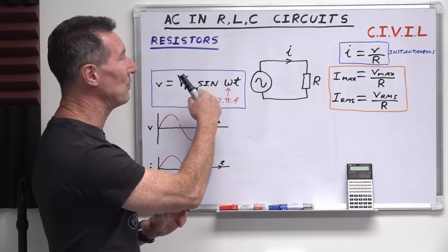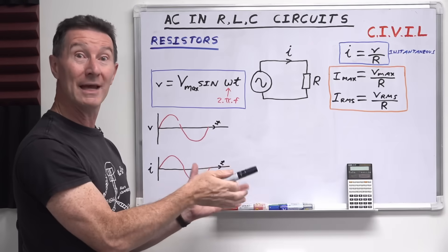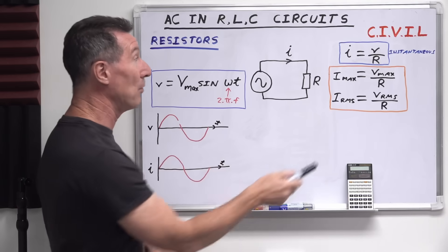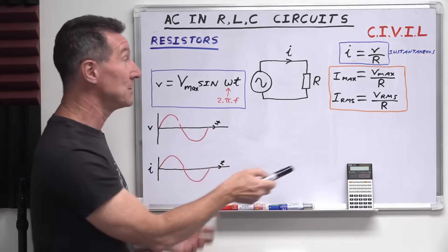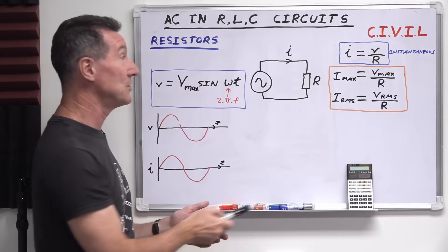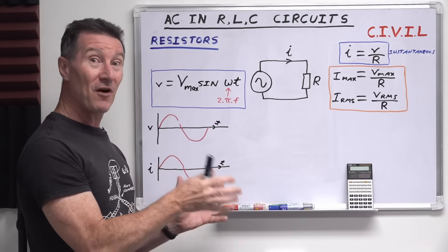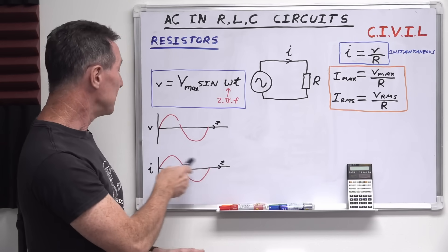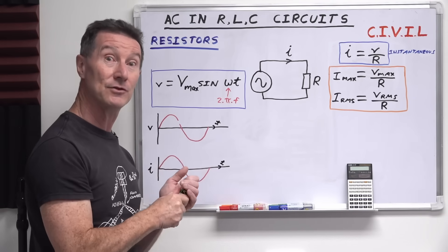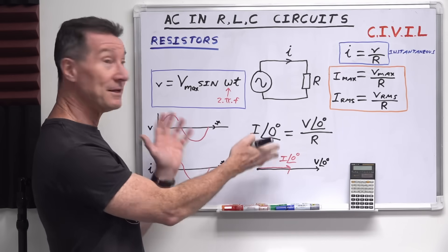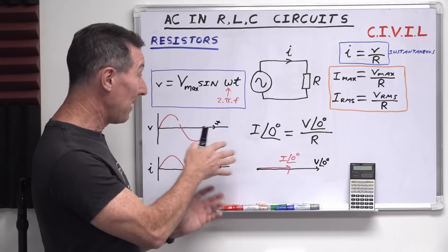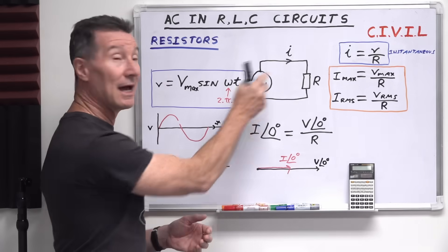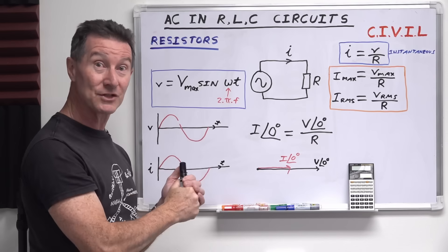Unless you need to, you can forget about all this instantaneous stuff and simply apply AC Ohm's law: the maximum current equals the maximum voltage divided by R. Or in terms of RMS, the RMS current equals the RMS voltage divided by the resistance. It's basic Ohm's law. So I just spent five minutes explaining it's exactly the same as DC. The issue is that when dealing with AC you're dealing in terms of phases and instantaneous values. Phases apply here — it's an AC circuit and the value is continuously changing, so we're going to have a phase angle.